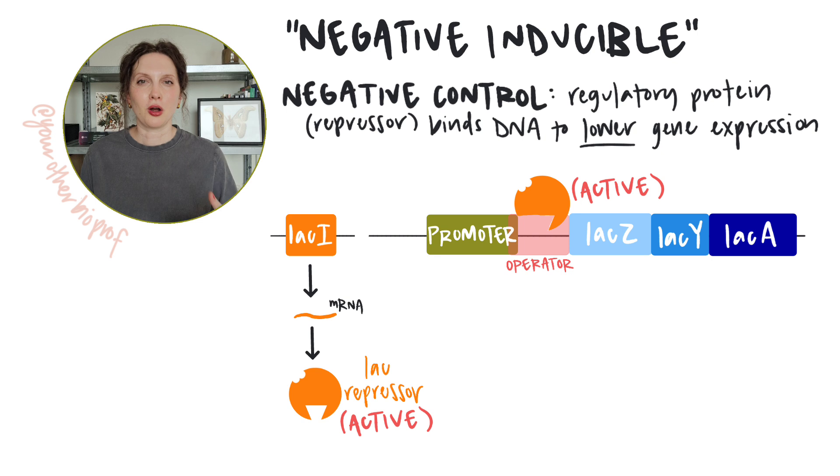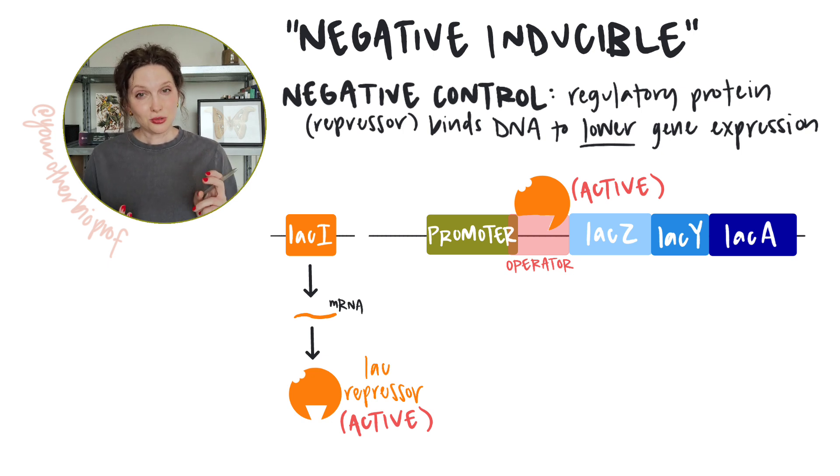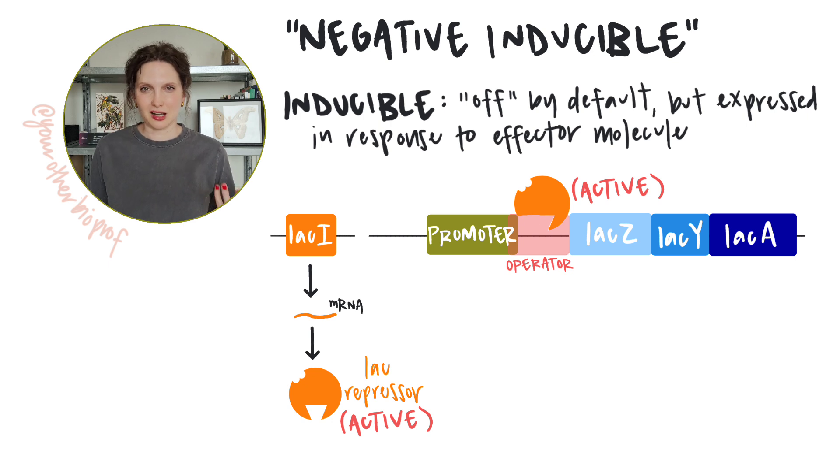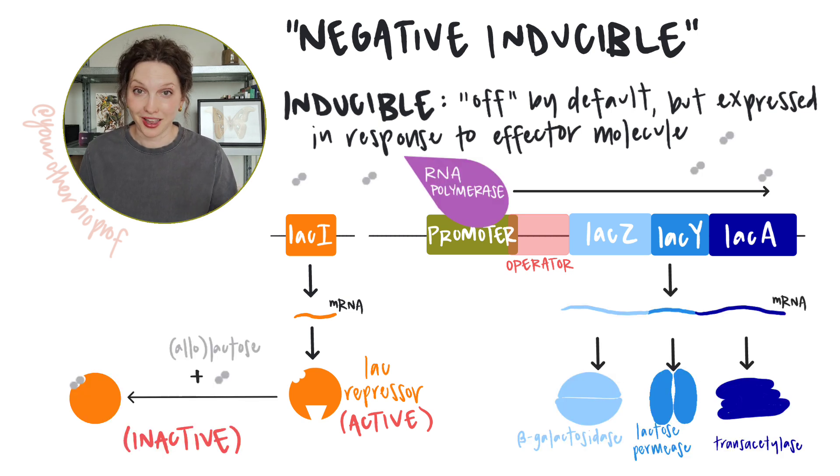Negative because when our regulatory protein, the repressor, binds to the operon DNA, transcription goes down, expression goes down. There's a negative impact on expression levels. And inducible because the default state of the lac operon is basically in the off position. Remember, that repressor gets produced in an active state. But the lac operon can be induced, transcription can be turned on, through the presence of that inducer molecule. Allolactose.